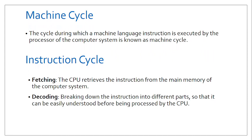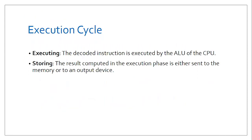After fetching happens within the instruction cycle, the decoding happens. The CPU can only process data that it understands, so decoding breaks down the instructions fetched from main memory. After decoding the instruction, it goes to the execution cycle, where it executes those particular instructions. After execution, it has the option of either displaying the information or storing it. These are the main cycles the CPU goes through: the machine cycle, the instruction cycle, and the execution cycle.